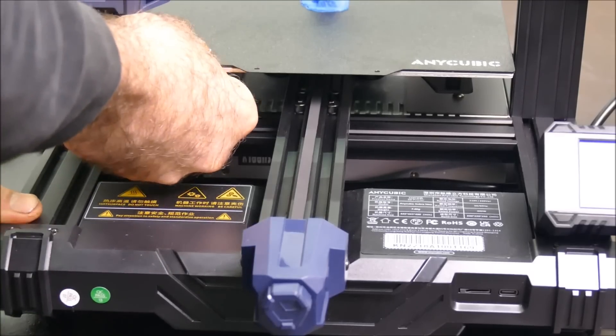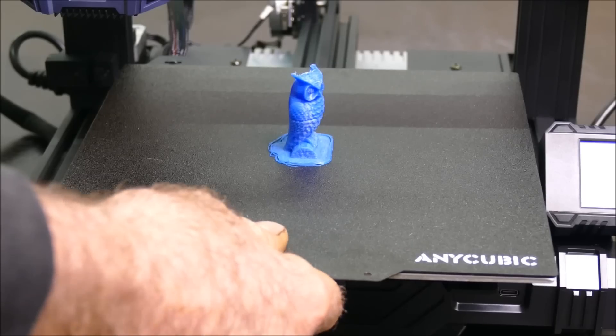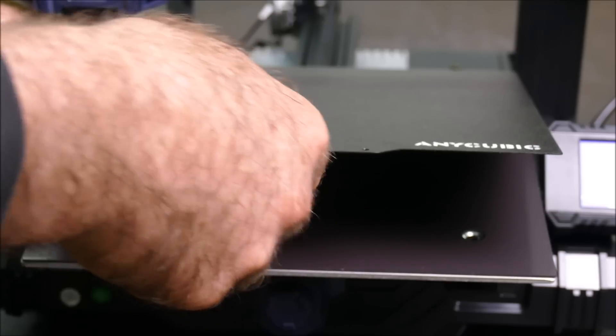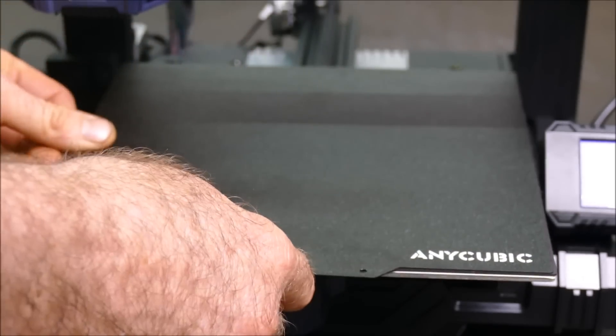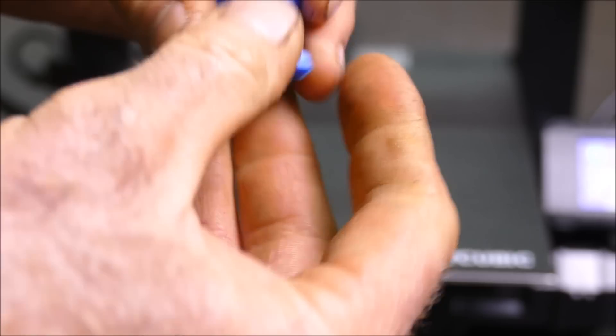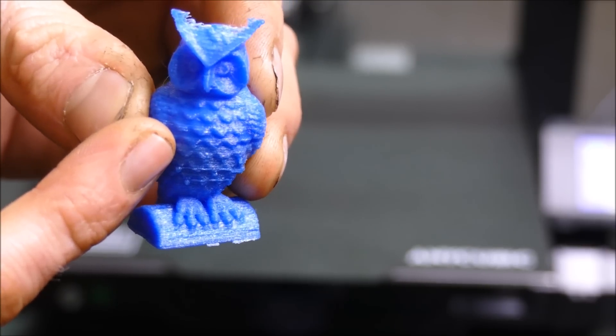So another key feature is the magnetic build plate. This should simply lift off. And then by flexing the build plate, things peel off easily. The magnets are also very strong. You can see on the skirt where I adjusted the Z height. It should come off. And you can see halfway where I adjusted the settings.